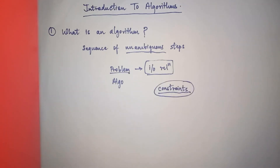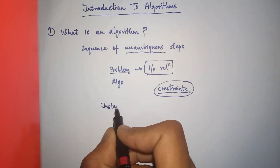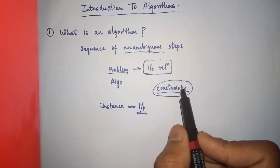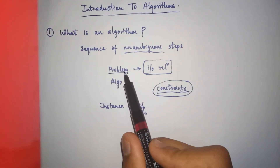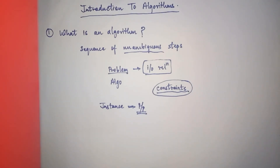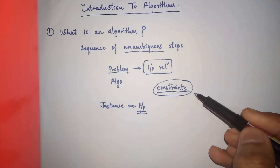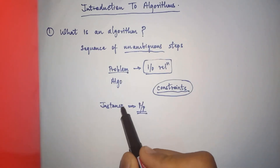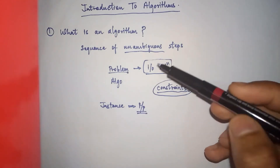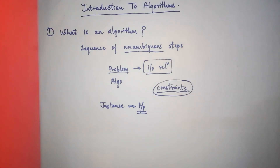To have a clearer understanding of what an instance is: an instance consists of an input, and this input must satisfy the various constraints imposed by the problem statement. The problem statement imposes conditions on how the input should be — the range in which the input must lie, and many other constraints. The instance should consist of input which satisfies all those constraints defined by the problem statement.